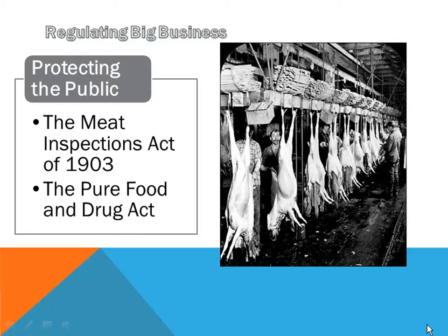Theodore Roosevelt was very disgusted about this. He used this outrage generated by the progressive movement to get the Meat Inspection Act passed. What it does is state that meat has to be inspected before it is actually sent to be consumed.